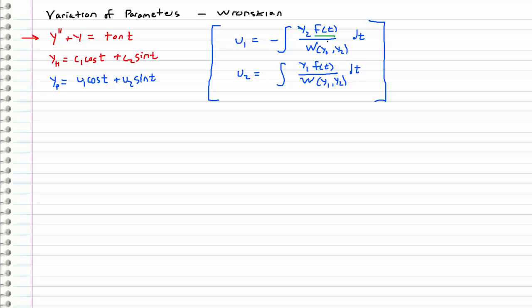What I mean by f(t) is just the non-homogeneous part of the differential equation. And what I mean by y1 and y2, these are the first and second homogeneous solutions.